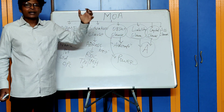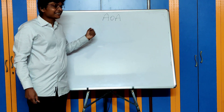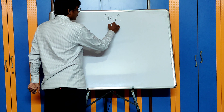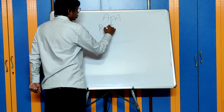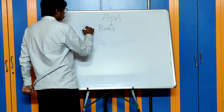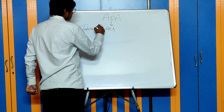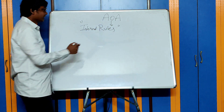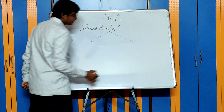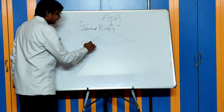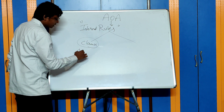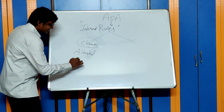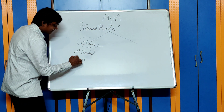That was a brief introduction to the MOA and its clauses. Now, AOA — Articles of Association — contains the internal rules which the company has to follow. Any clause in the Articles of Association can be altered by passing a special resolution in the general meeting of the company.